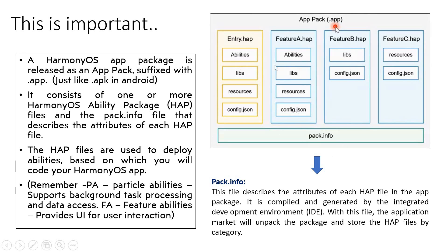The .app package will have multiple components inside. The first one you can see right away is pack.info, followed by .hap files — you can see entry.hap, feature A.hap, feature B.hap, feature C.hap, and so on. Inside the app package you will also find what is called the HarmonyOS Ability Package, or HAP. There can be one or more HAP packages based on what you do.